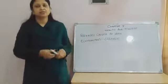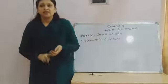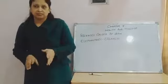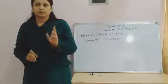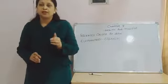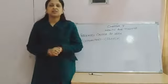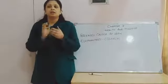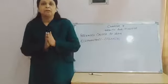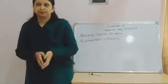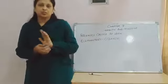Elephantiasis or filaria is a parasitic disease caused by a roundworm. The filarial worms are transmitted and spread by blood-feeding black flies and mosquitoes.